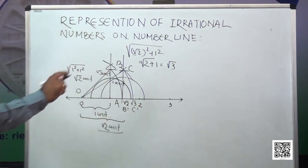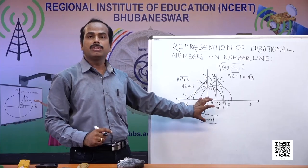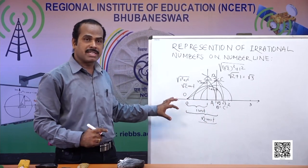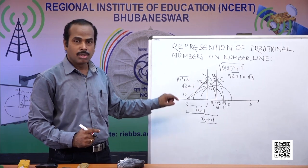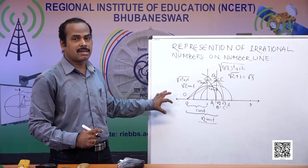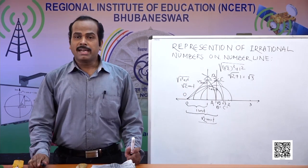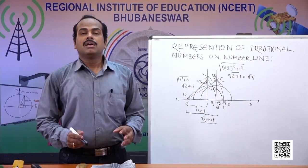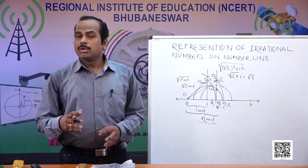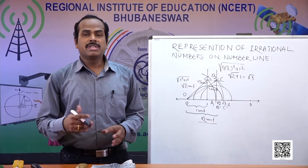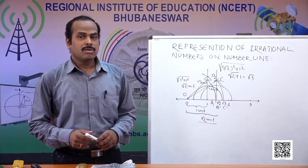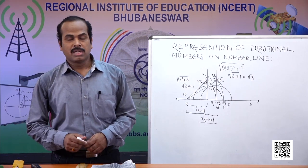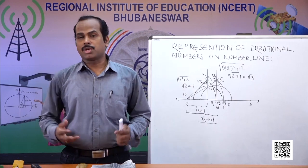By this process I brought root 3 also onto the number line. So we have learnt how to represent root 2 and root 3 on the number line. Similarly, using root 2 and root 3 with this same process, we can also create a square root spiral — a design we find in nature also.